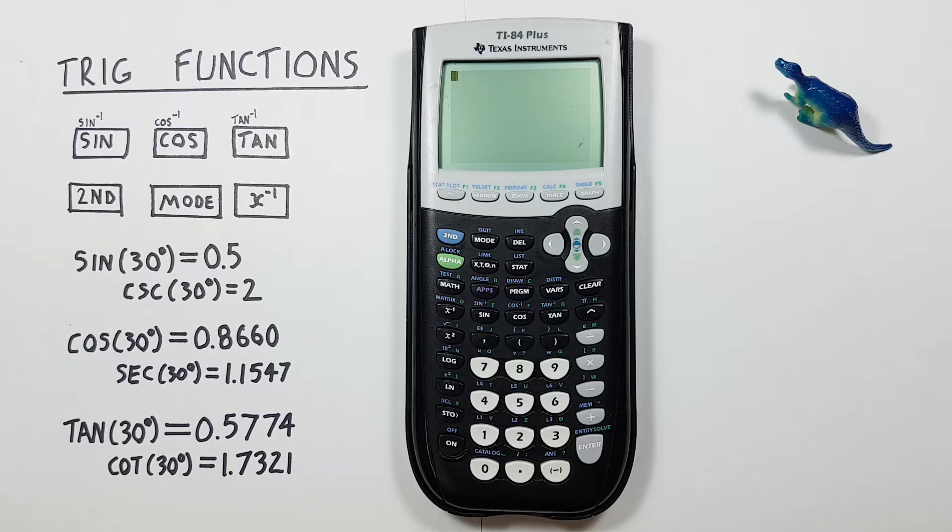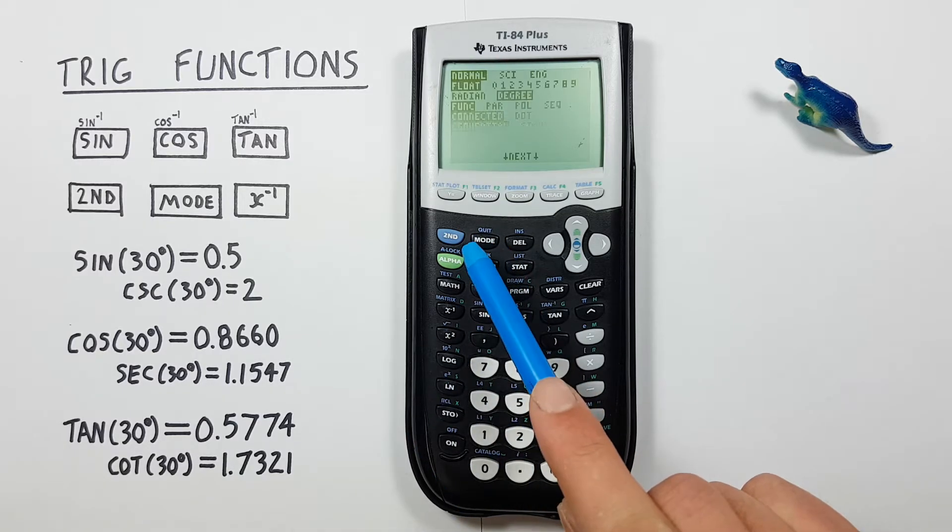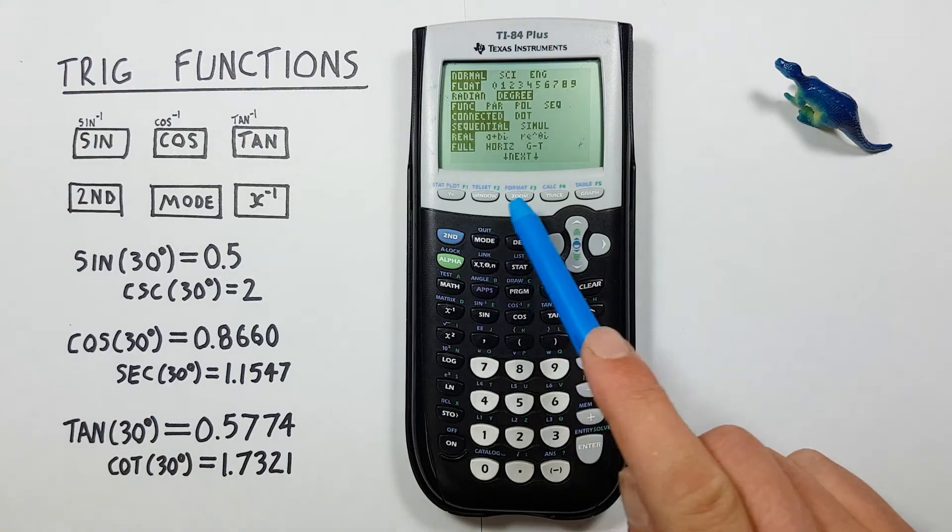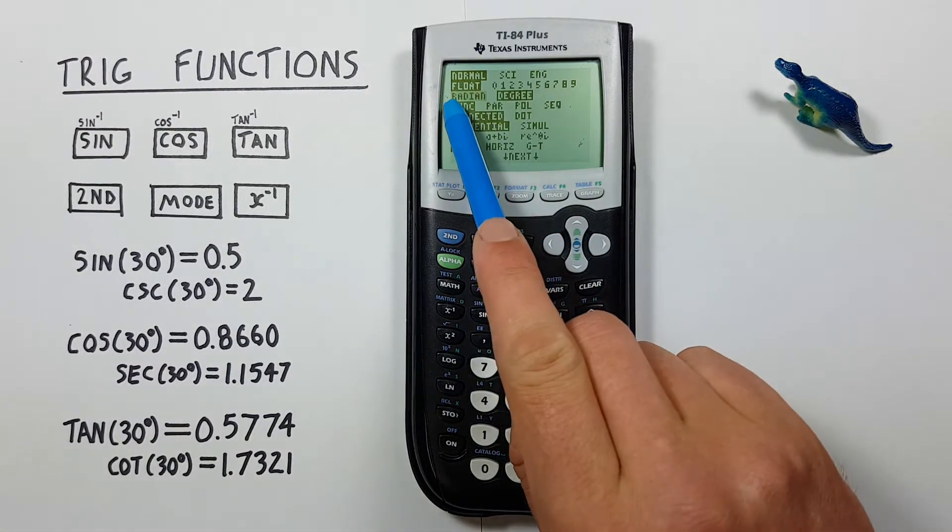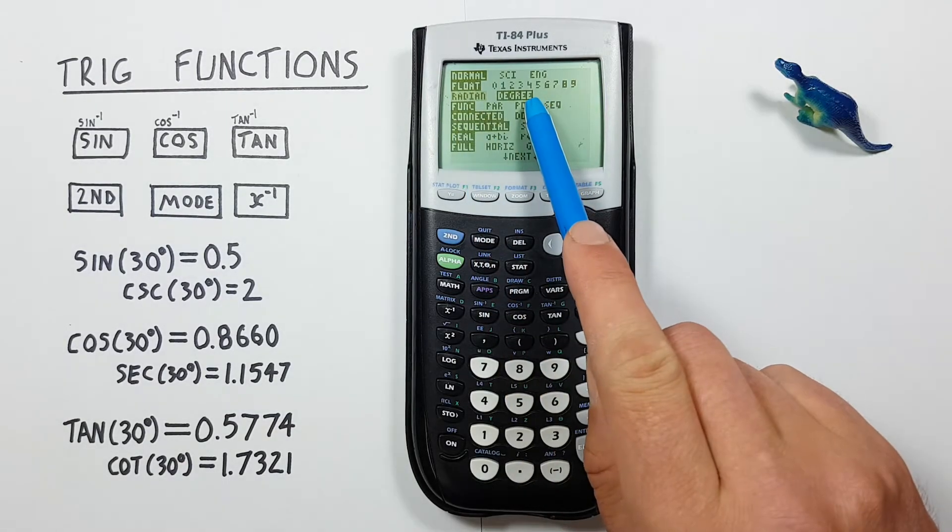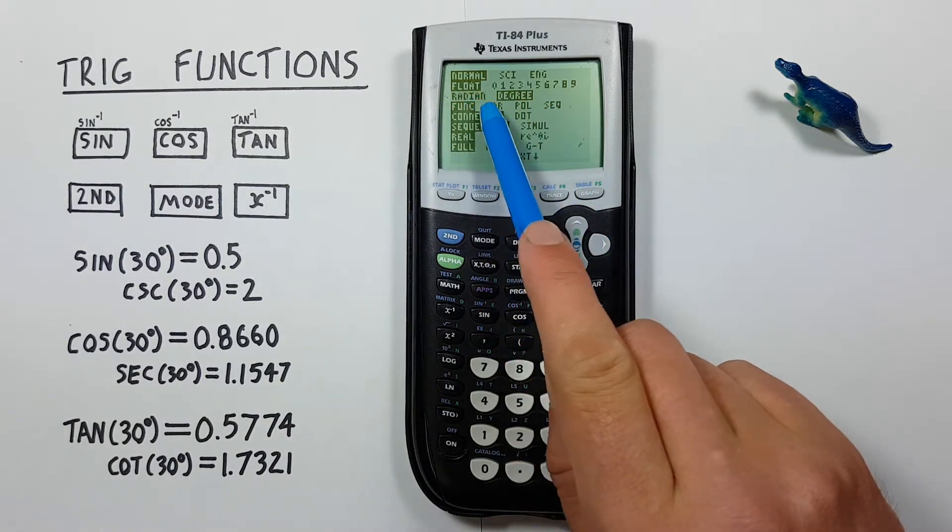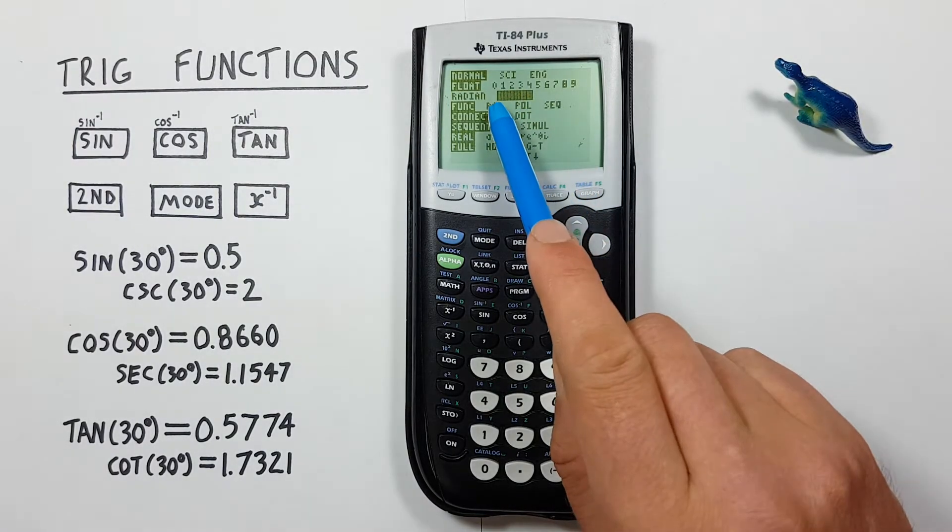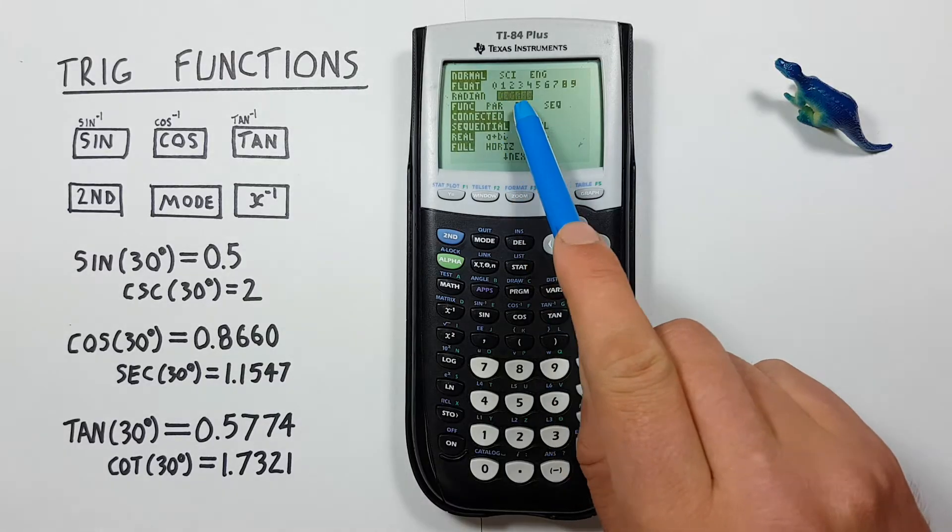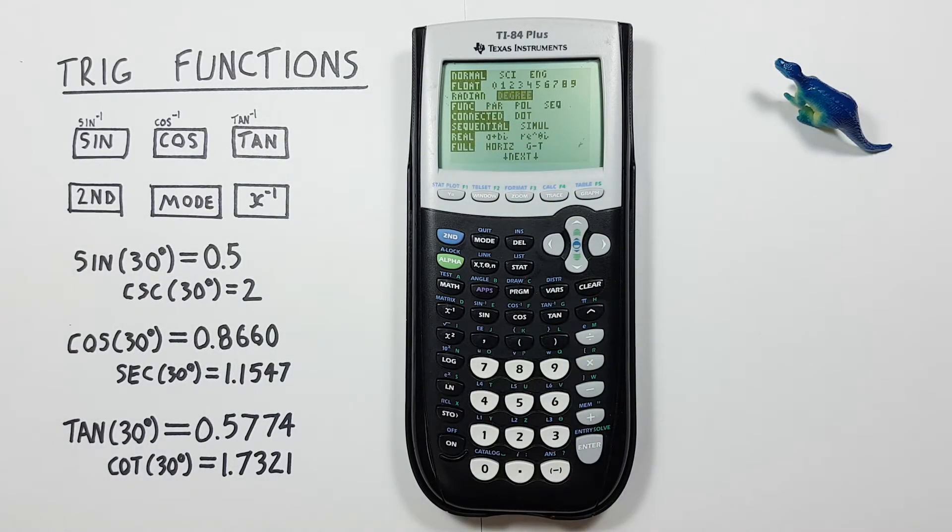The examples shown here will be done using degrees, so the first thing we want to do is make sure we're in degree mode. To do that press mode, and that'll bring us to this menu here. And if we scroll down twice, we see we have either radians or degrees. If we're working with degrees, we want degrees to be highlighted. If it's not, you can scroll over, press enter, and then you can clear yourself out of this menu. And we're ready to get started.